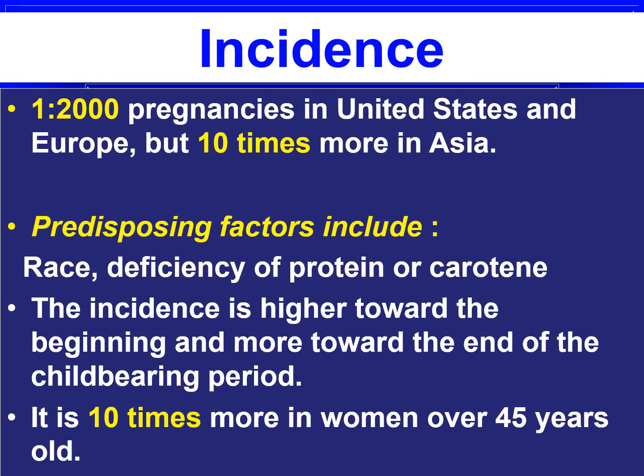The incidence of vesicular mole is 1 in 2000 pregnancies in the United States and Europe, but it is 10 times more common in Asia. Predisposing factors include race, deficiency of protein or carotene, and the incidence is higher at the beginning and end of the childbearing period — it is 10 times more common in women after 45 years.